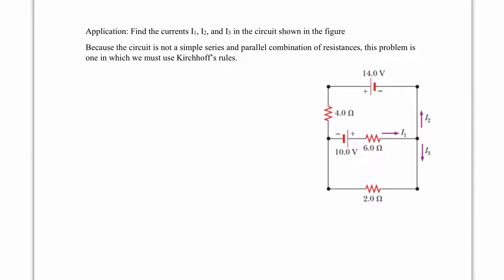Because the circuit is not a simple series or parallel combination of resistances, we must use Kirchhoff's rules. We determine that current in the upper portion flows counterclockwise. At a junction where currents split, the current going in must equal the sum going out, giving us I1 equals I2 plus I3.